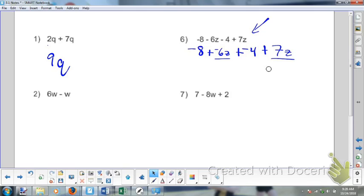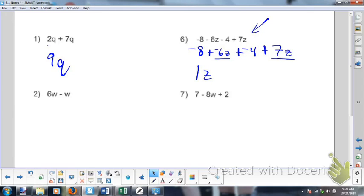Negative six Z's plus positive seven Z's. Well negative six plus positive seven is positive one Z. Now in a lot of cases we don't write the one because it's just one times Z. Same thing as Z.